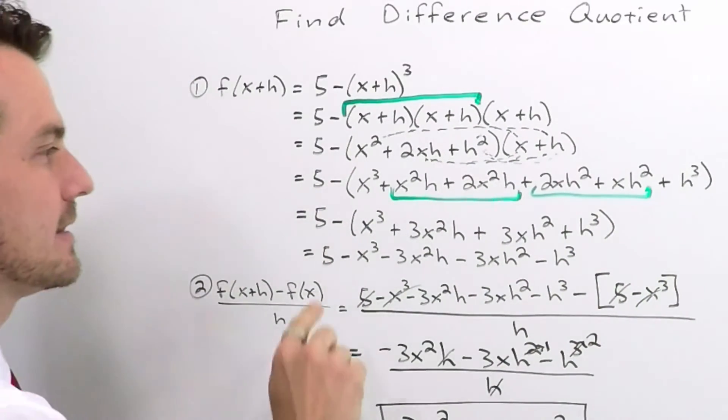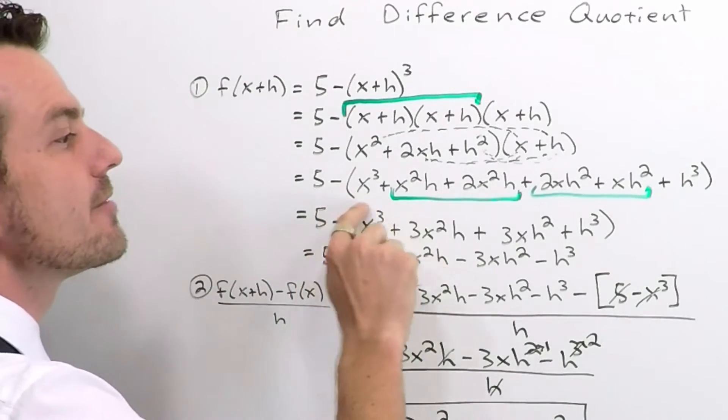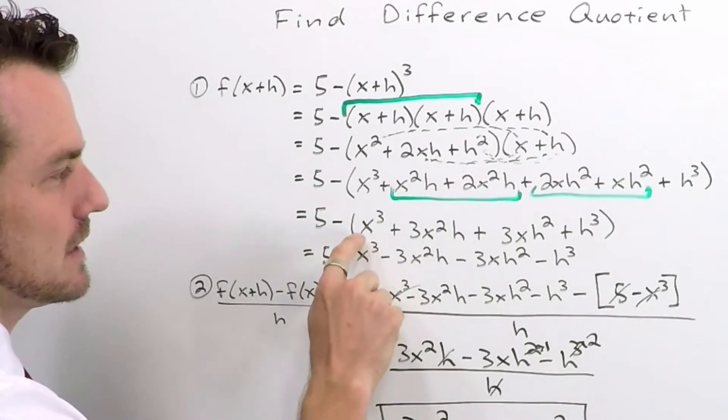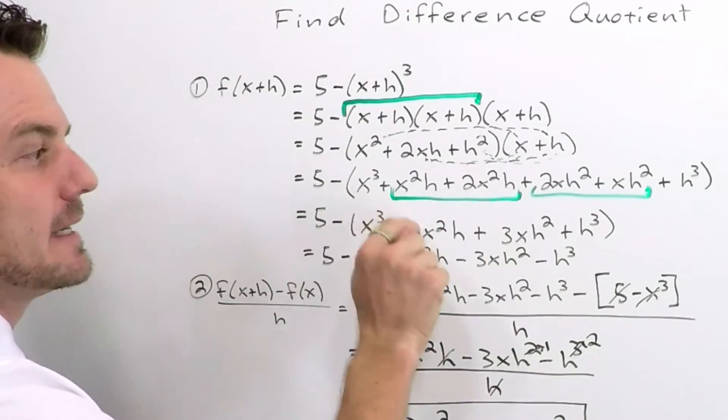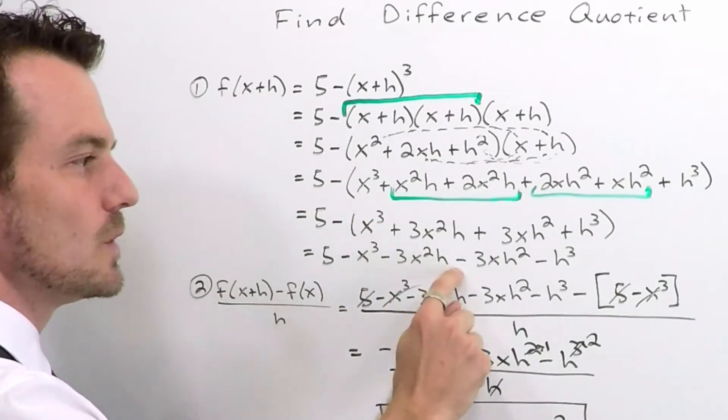Finally, we can let the negative get distributed onto every component. Well, all of these were positive, so letting the minus touch each one makes each one negative.